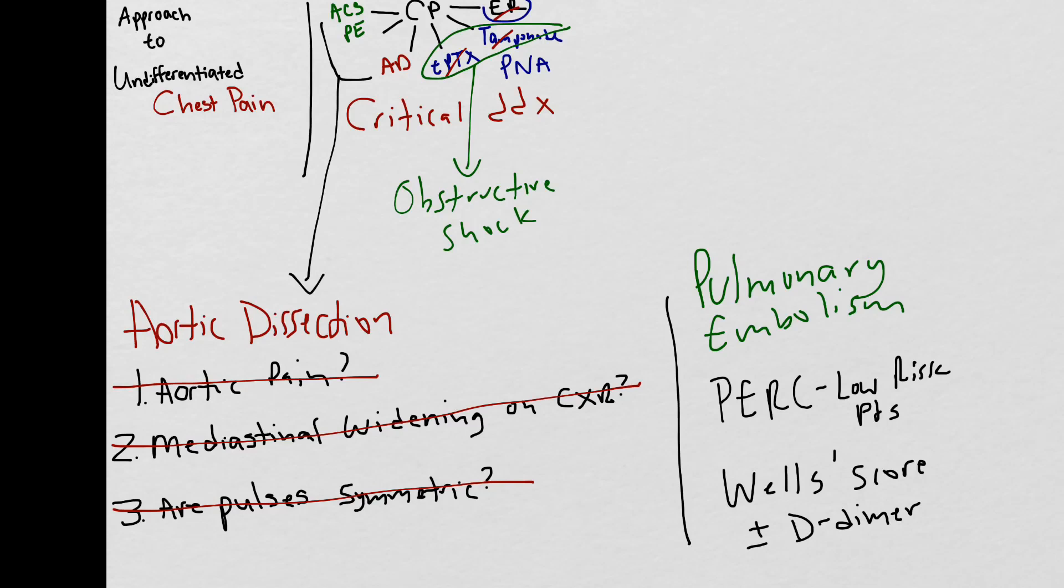Patients that are high-risk by Wells score or Geneva score should go directly to CT angio of the chest, and the utility of D-dimer in these patients is limited and should go directly to the definitive gold standard test to ruling out PE.